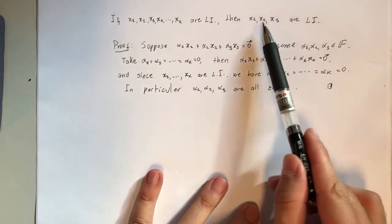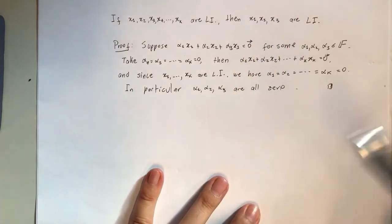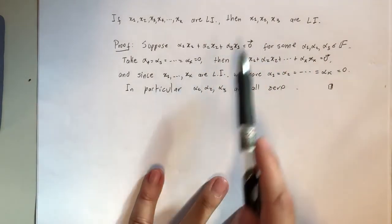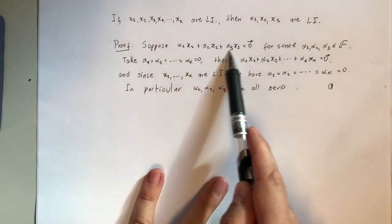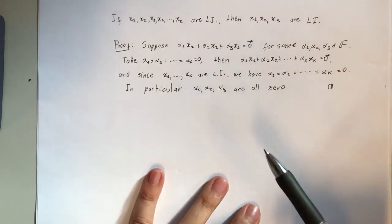To prove that a collection of vectors is linearly independent, there are many ways - there are some theorems, some conditions you can check. We're going to check directly the definition. So what's the definition? We take some linear combination of these vectors, assume this linear combination gives zero, and we have to show that this is the trivial linear combination.